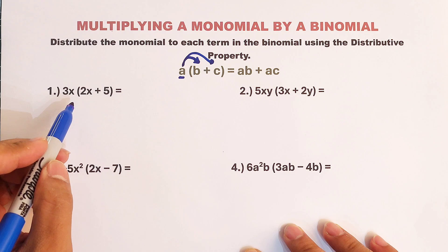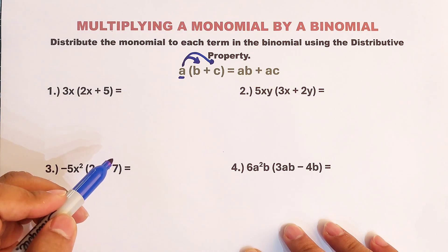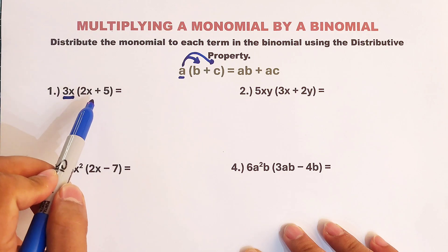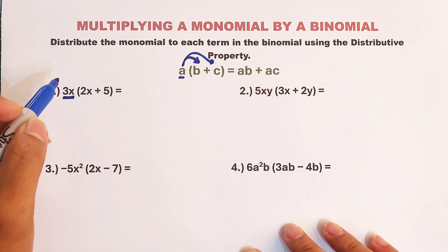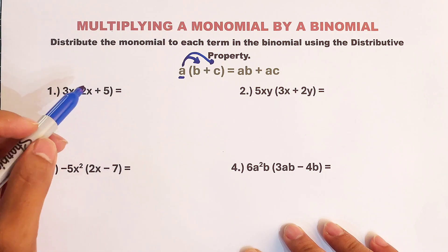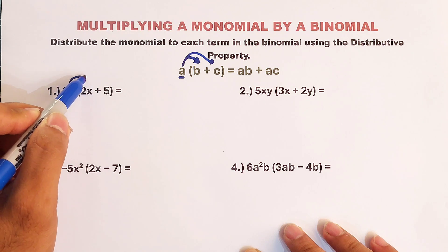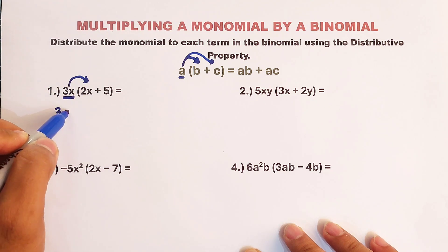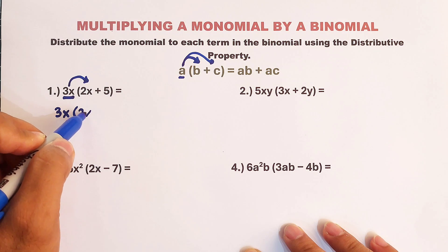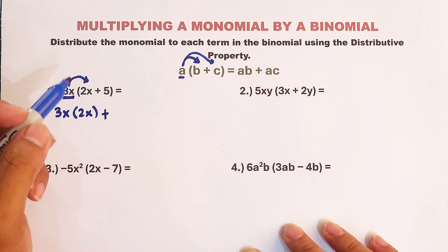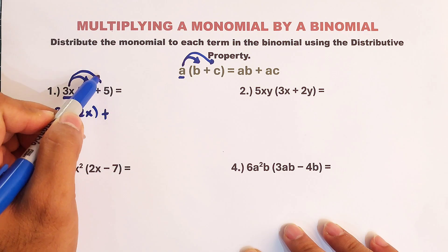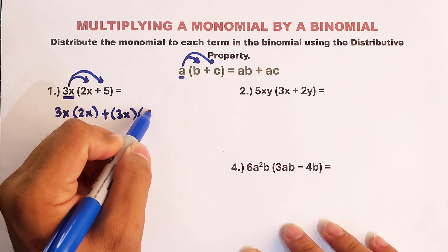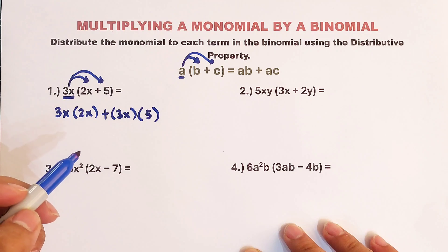Let's get started. We have here 3x times (2x plus 5). The monomial is 3x and the binomial is 2x plus 5. We will distribute 3x one by one, and it goes like this: 3x times 2x, plus 3x times the second term, which is 5.